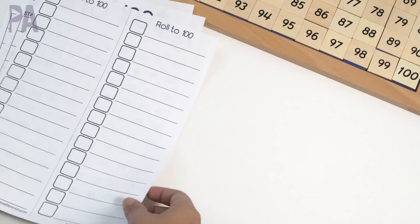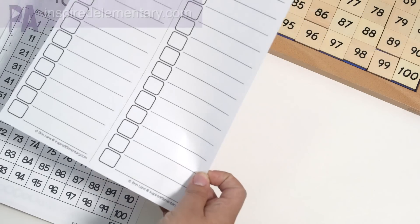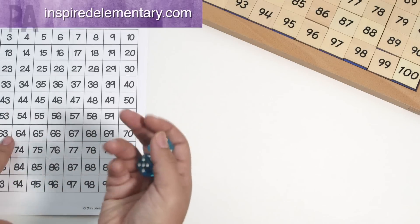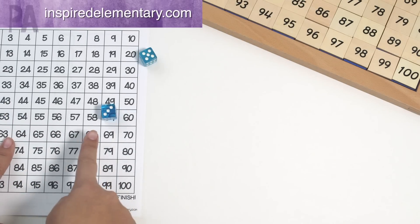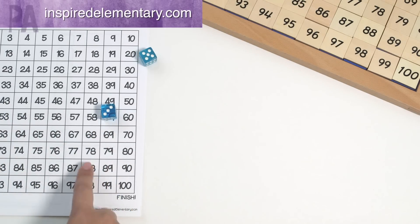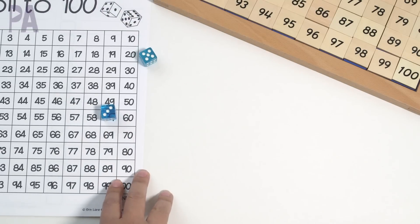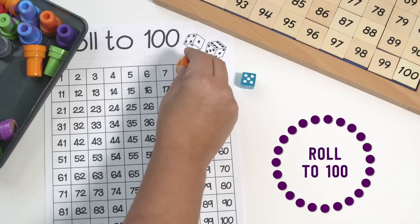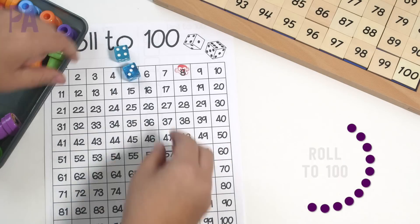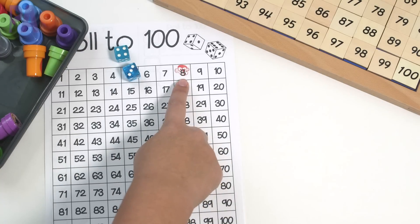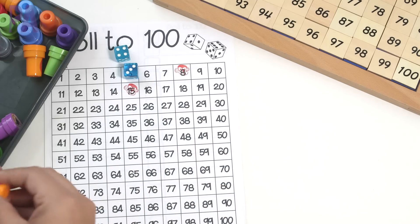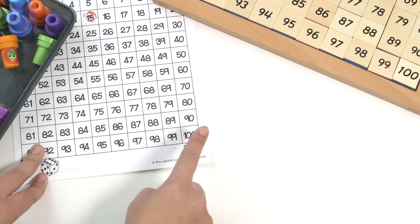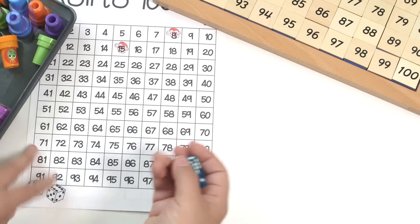And then we have this really fun game. It's from inspiredelementary.com. It's rolled to 100. Basically what you do is you take the dice and you roll and whatever amount you get—in this case it's eight—you would mark off the eight square on the sheet. I'm going to use my stampers for this one. Then you'd roll again. This case it's seven, so you would add seven to that eight and then place your stamp there. And then you keep on going until you get all the way to 100. Whoever gets the 100 is the winner.